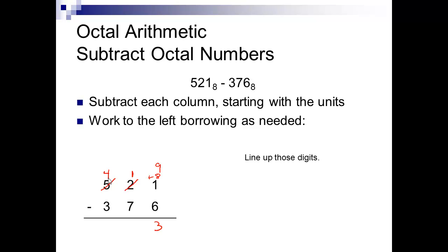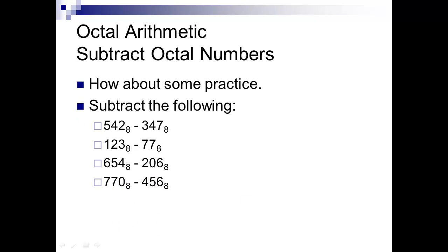We can't take 7 from 1, so we're going to have to borrow again. The 5 becomes a 4, we add 8 to the 1, making it 9. 9 minus 7 is 2. Then 4 minus 3 is 1. So our answer is 123 base 8. Just like binary — except instead of adding 2s, we're adding 8s when we borrow.